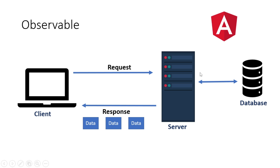Now let's look at Observable. Observable will keep on pinging the server, and whatever data it gets it will send in chunks — as a stream of data. So in Promise it waits for all the data to come and sends it all at once, while in Observable it keeps pinging the server and sends whatever data it gets as a stream response.